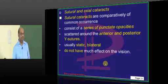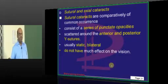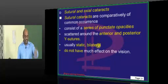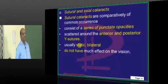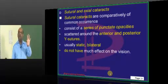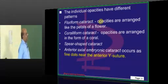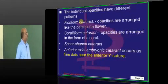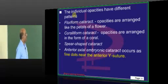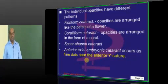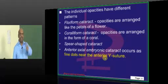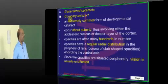Sutural and axial cataracts: sutural cataracts are very common and can involve the Y-suture, as seen in the clinical photograph. Usually they are static, bilateral, and do not affect vision — three important things to remember. Among sutural and axial cataracts, they can have different patterns: floriform, coralliform, spear-shaped, or extending along the anterior Y-suture.